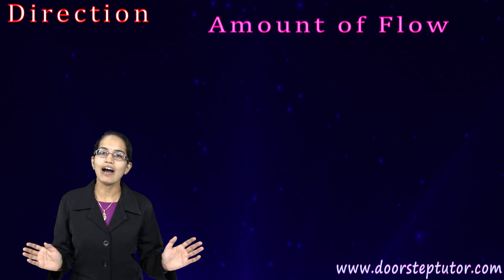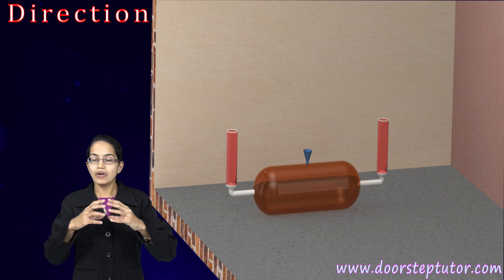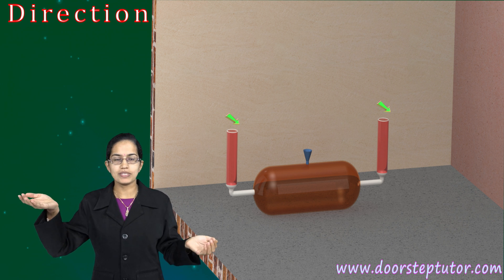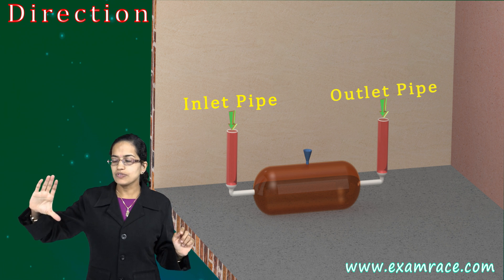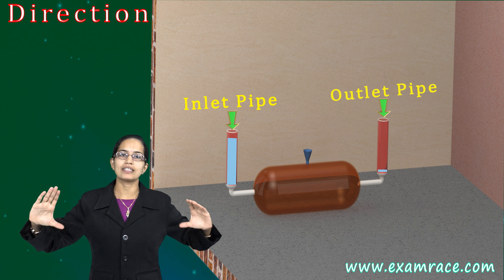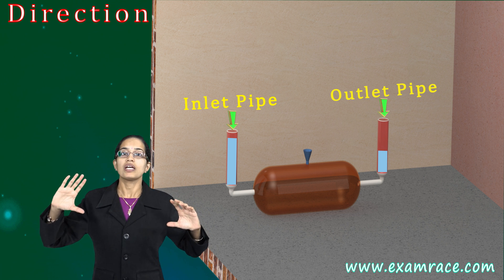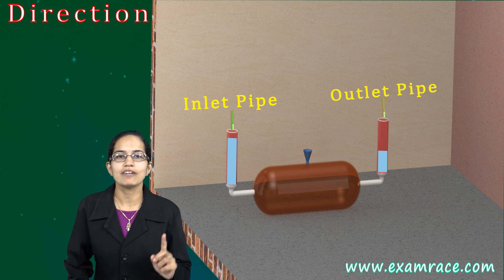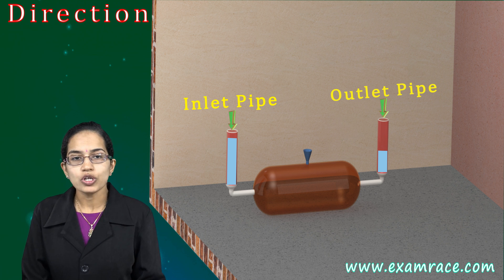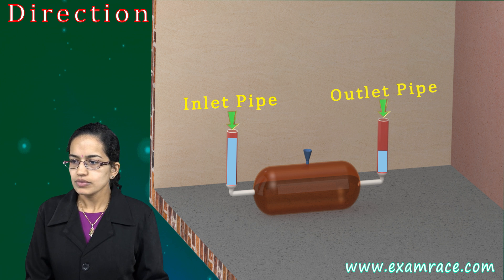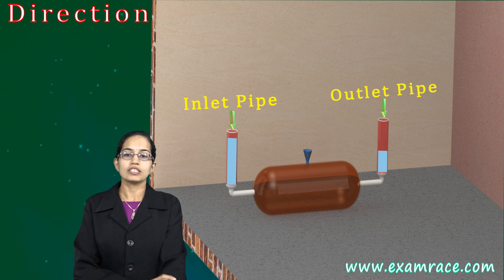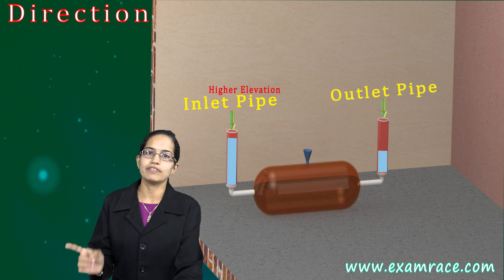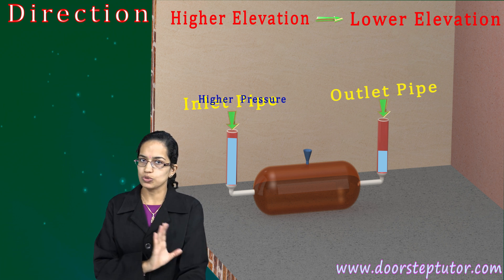To understand these two components, we have a simple demonstration. We have a tank full of sand connected by two pipes — an inlet pipe and an outlet pipe — with a certain amount of water in each. The first problem Darcy tried to solve was the direction of flow. A simple principle is that water flows from higher elevation to lower elevation and from higher pressure to lower pressure.